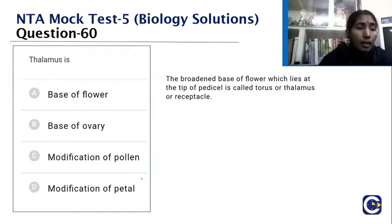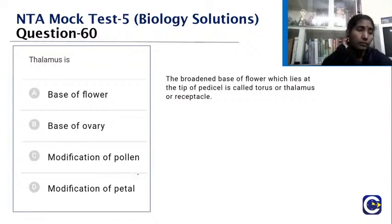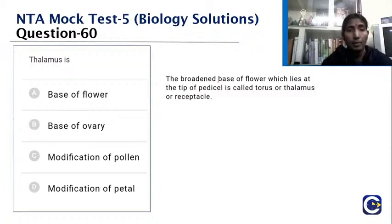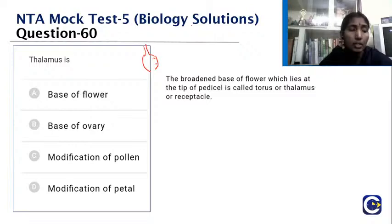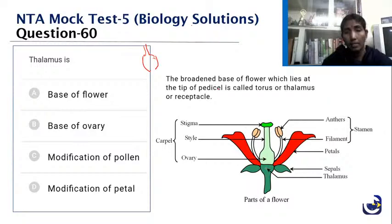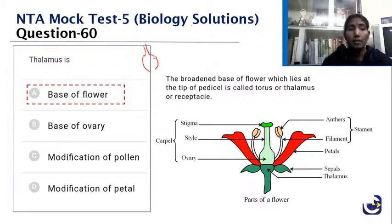Question: what is the thalamus in a flower? The thalamus is the base of a flower — the swollen tip of the peduncle (pedicel) that forms a cone-like structure with nodes and highly reduced internodes. It is also called the torus or receptacle. The answer is the base of a flower.